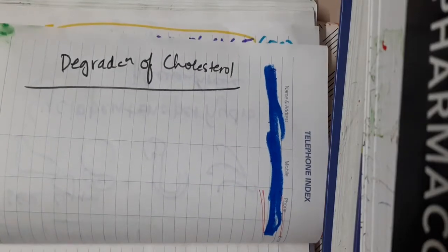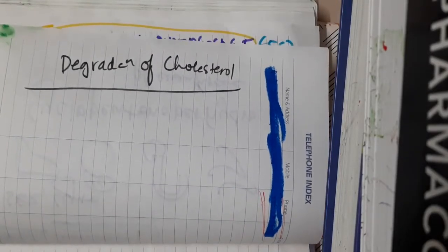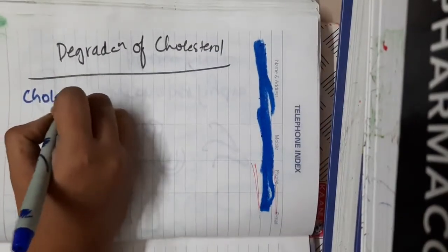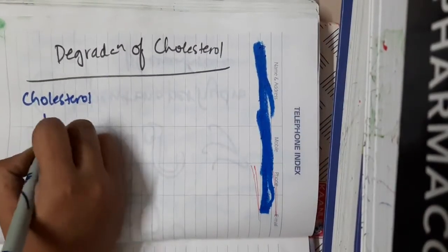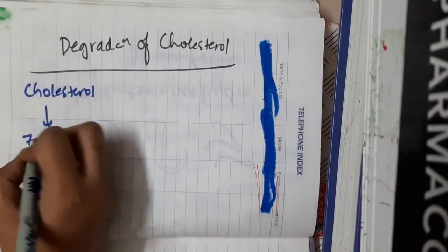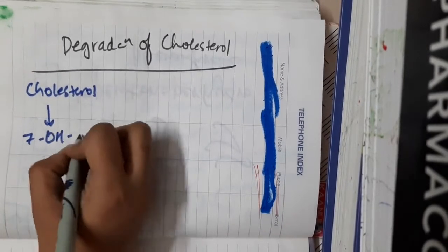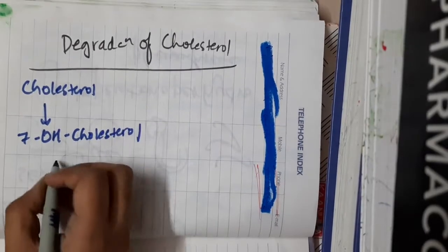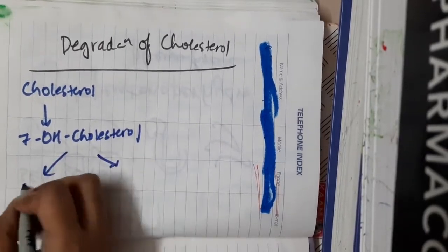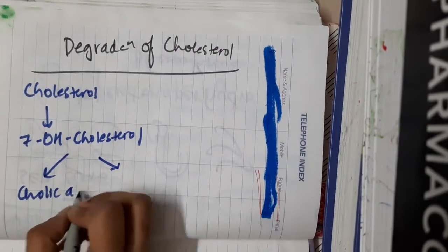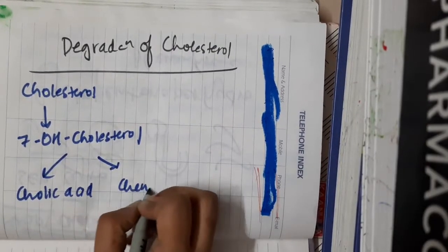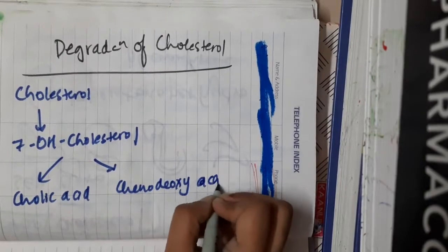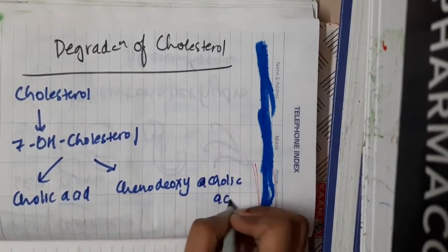Hello friends, let us now learn some important points about degradation of cholesterol. Cholesterol gets converted in the presence of 17-alpha-hydroxylase to 17-hydroxycholesterol. This 17-hydroxycholesterol gets converted to cholic acid and chenodeoxycholic acid, which are the primary bile acids.